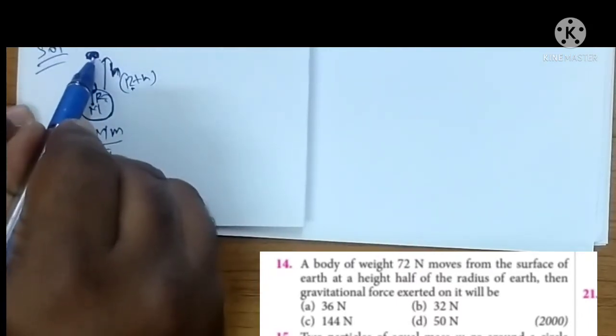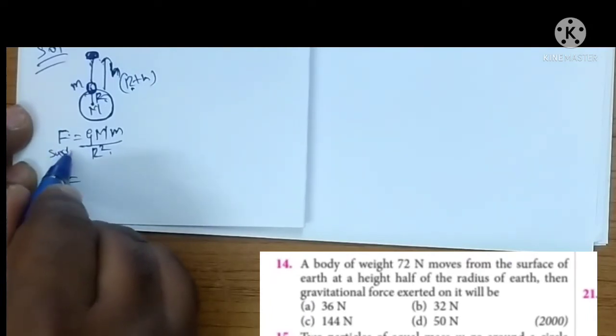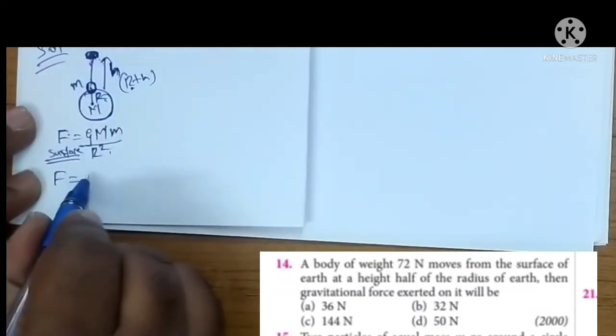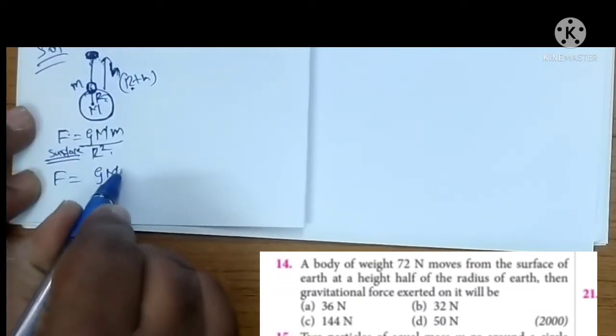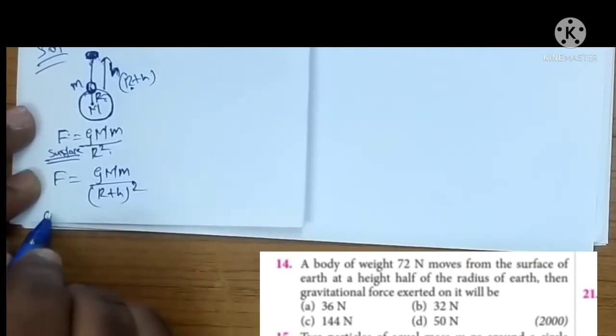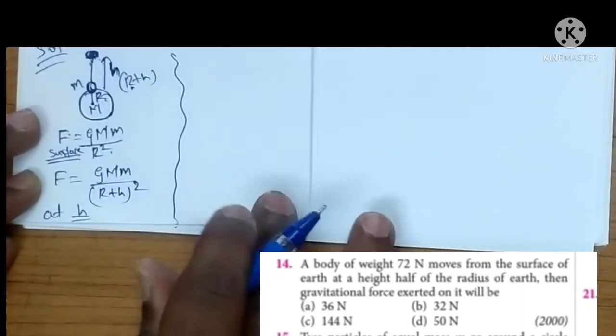So इधर gravitational force कितना रहेगा? यह surface है. So इधर कितना है? At height h, कितना होता है? G, M, m, upon r plus h square होता है. At height h. Then solve this one.